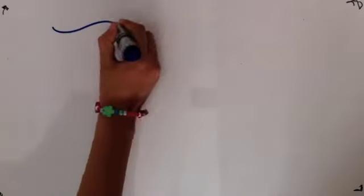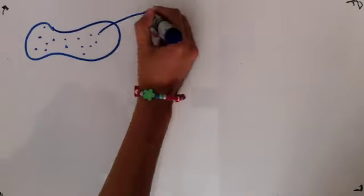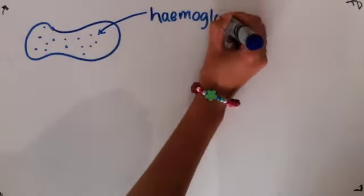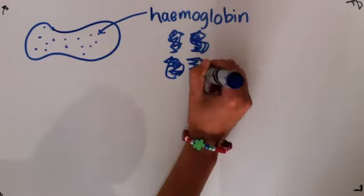So how can this happen? Let's go back to the beginning. In the red blood cells, there are globular proteins called hemoglobin, which carry oxygen.